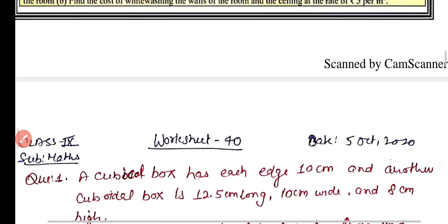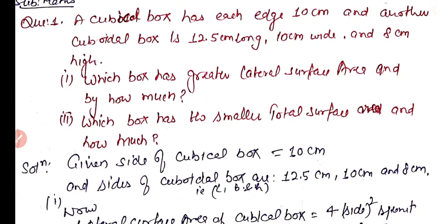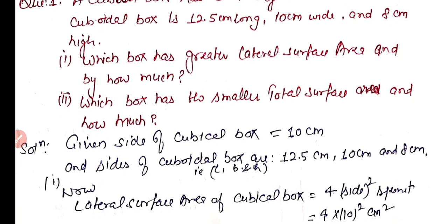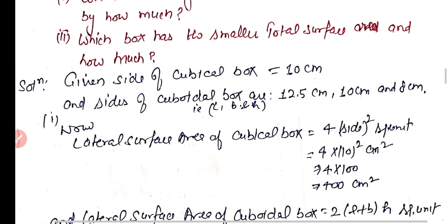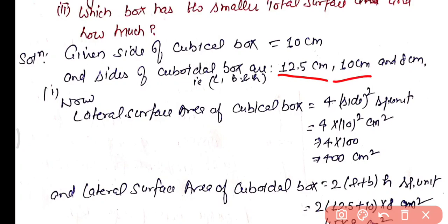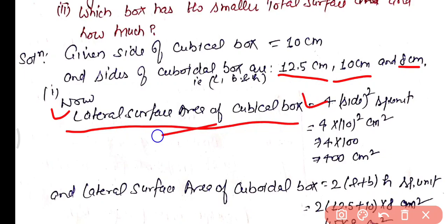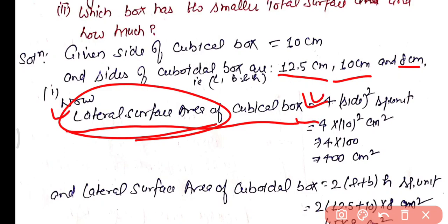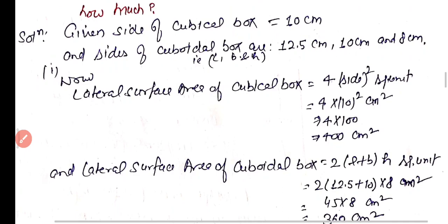Practice Question 1: A cubical box has each edge 10 cm, and another cuboid box is 12.5 cm long, 10 cm wide, and 8 cm high. Which box has the greater lateral surface area and by how much? Lateral surface area of the cubical box = 4 × (10)² = 4 × 100 = 400 cm².